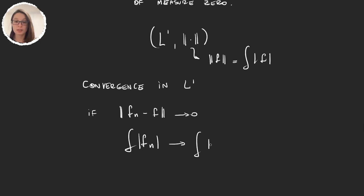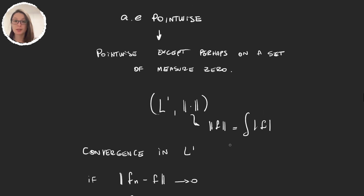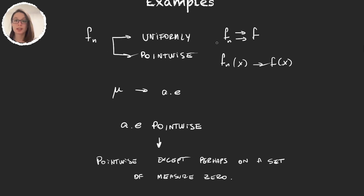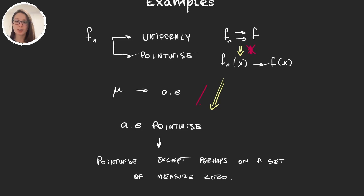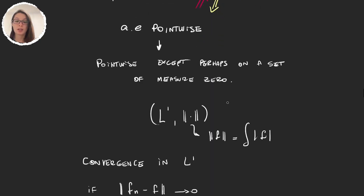Convergence in L1 means fn converges to f in L1 if the norm of fn minus f goes to 0, or equivalently if the integrals of fn go to the integrals of f. We know that uniform convergence implies pointwise convergence, and the converse is not true. Pointwise convergence implies almost everywhere convergence, but the converse fails as well.